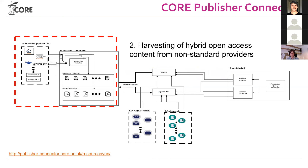We were really interested in getting access to content provided by big publishers such as Elsevier and Springer, because they started to be important publishers of open access content. We realized these publishers do not support OAI-PMH — they have their own APIs, and each of those APIs is different. So we decided to create something we call a Publisher Connector.